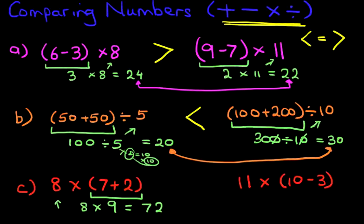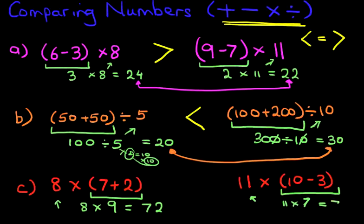Now the set of numbers on the right. We've got 11 times, and then we've got 10 minus 3 in brackets. Do the brackets part first: 10 minus 3 is 7. And then we do the first part — we've got 11 times 7. What is 11 times 7? It is 77.